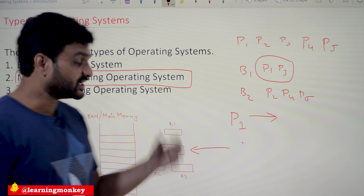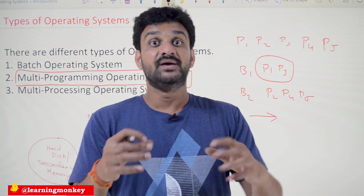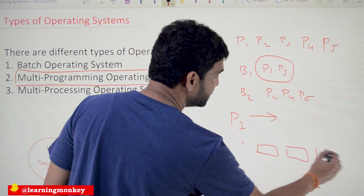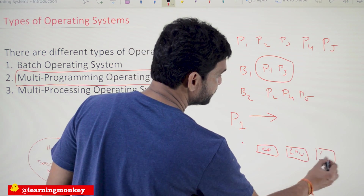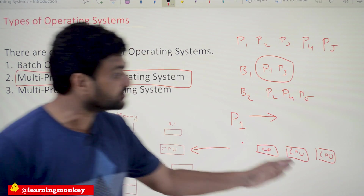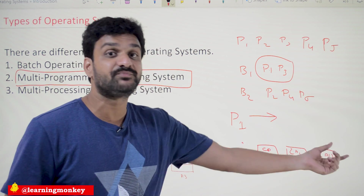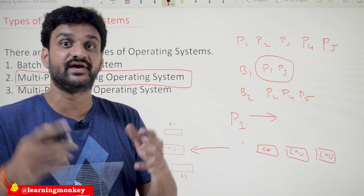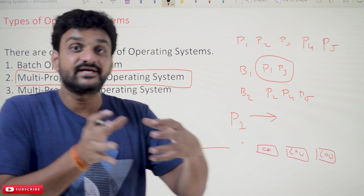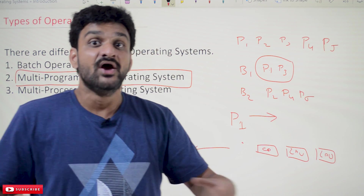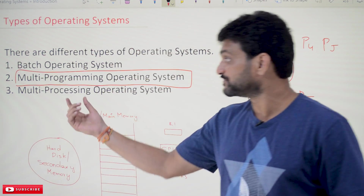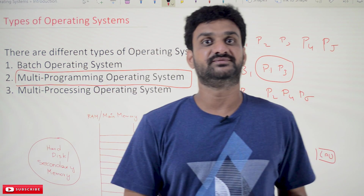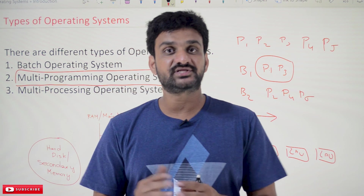The third kind of operating system is the multi-processing operating system. The name itself states that it has multiple processors. Unlike multi-programming which has only one CPU, in the multi-processing operating system we will be having multiple central processing units. A single program may execute on multiple processors, or multiple programs may execute on multiple processors. The operating system is designed in such a way that a single program can get executed across multiple processors. That kind of operating system, which is capable of facilitating multiple processors, is what we call a multi-processing operating system.